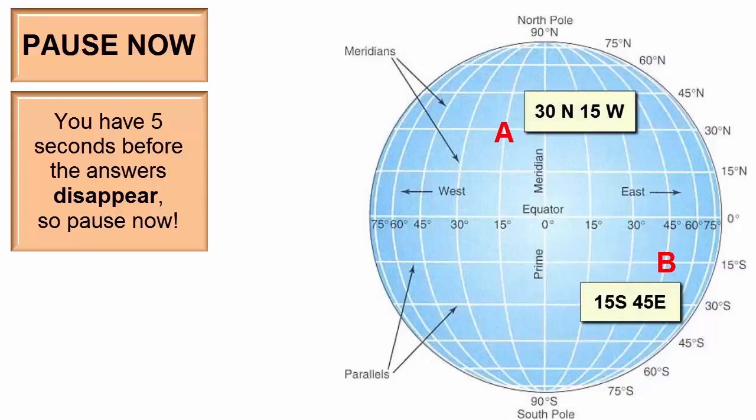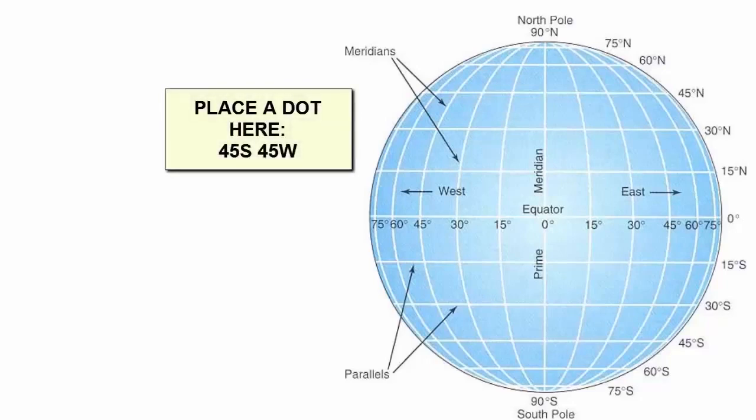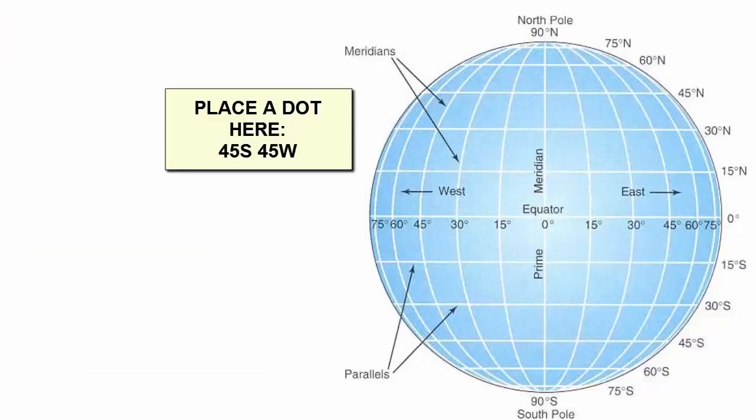Now try to accurately locate or place a dot on the spot that is located 45 degrees south of the equator and 45 degrees west of the prime meridian.